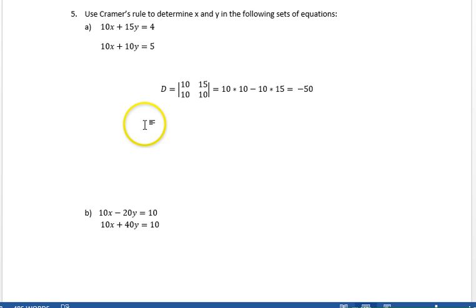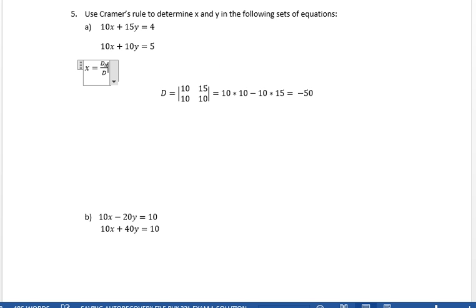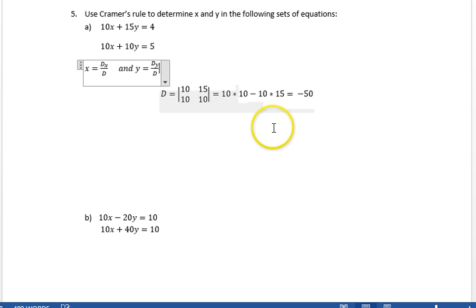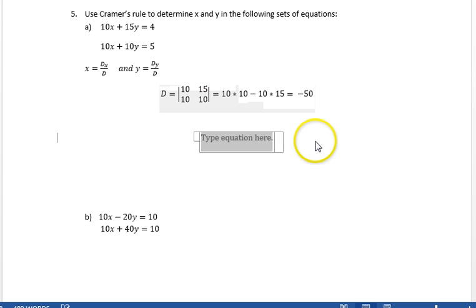That's the determinant. And we know from Cramer's rule that in these notations, x is going to be d sub x over d. And y is going to be d sub y over d. So next question is, what's d sub x?